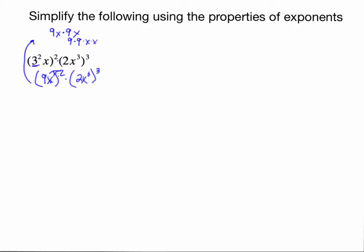So this becomes 9 to the second power times x to the second power. The same thing happens with 2x to the third — that whole quantity would be repeated three times: 2x to the third times 2x to the third times 2x to the third. So each of those factors would also be multiplied by itself three times. That means 2 would be multiplied by 2 a total of three times, and x to the third itself would be multiplied times itself three times. This is the power-to-a-power rule, where you distribute the exponent to each factor in that quantity.